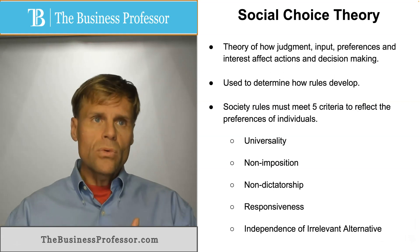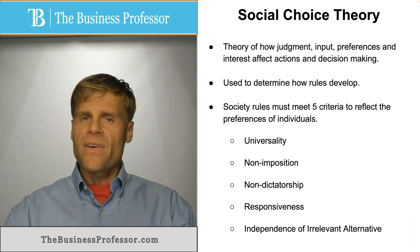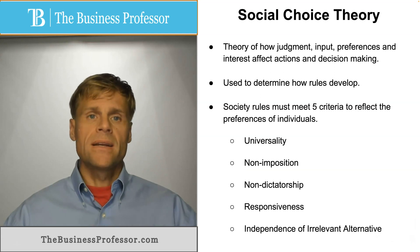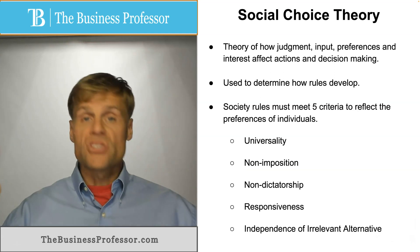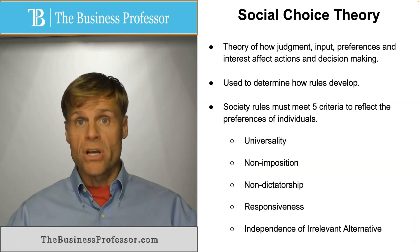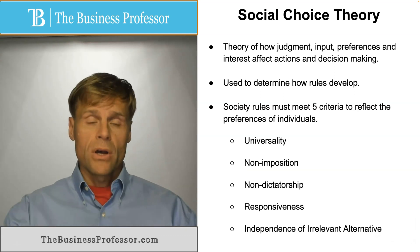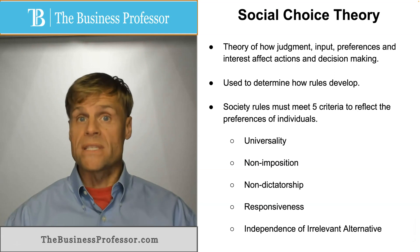So if a rule meets these five criteria, then it's a socially just rule under social choice theory.